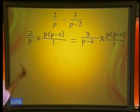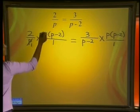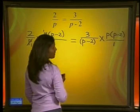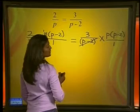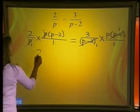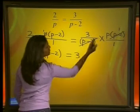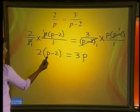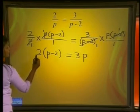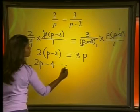Now let's cancel our terms. p divides into p once, and p minus 2 — remember it is one term, so we can put brackets around it — p minus 2 goes into p minus 2 once. We are left with 2 multiplied by p minus 2, which is equal to 3 multiplied by p. Now there are still brackets here, which means we need to multiply 2 into each term in the brackets. We get 2 times p, which is 2p, and 2 times minus 2, which is minus 4, equal to 3p.